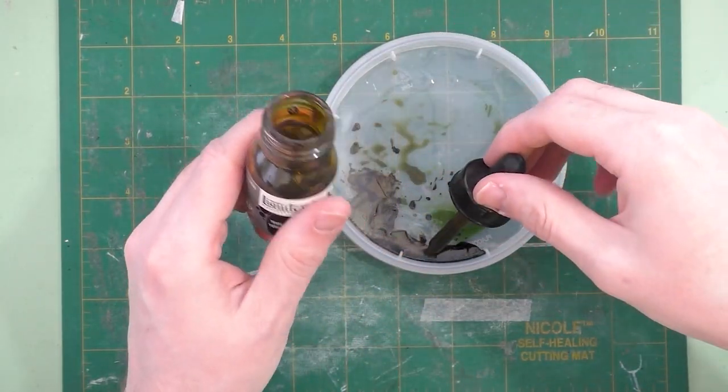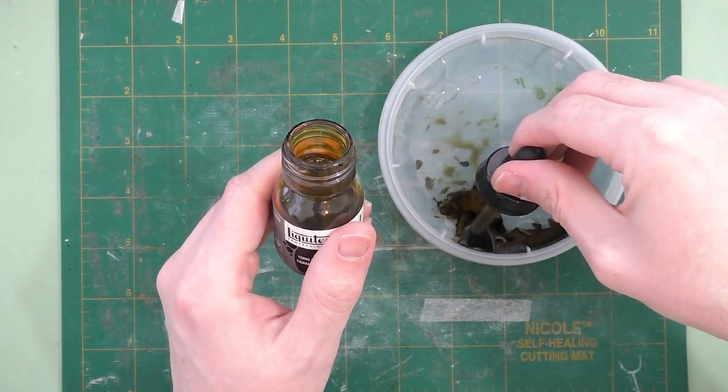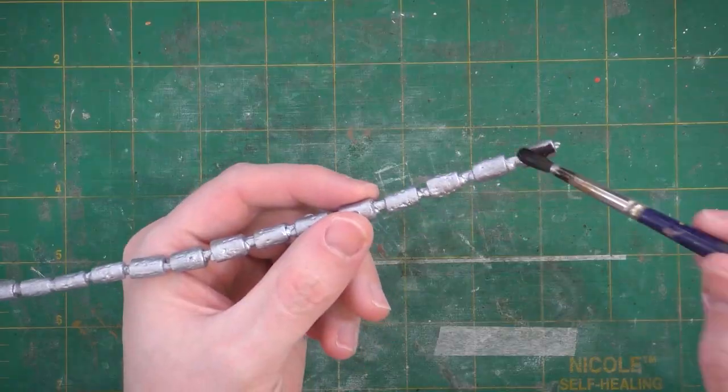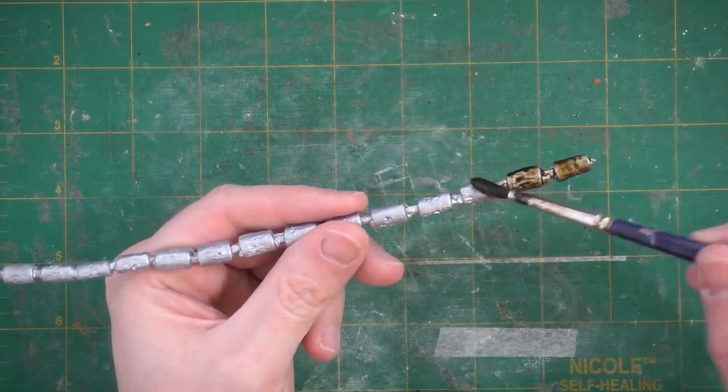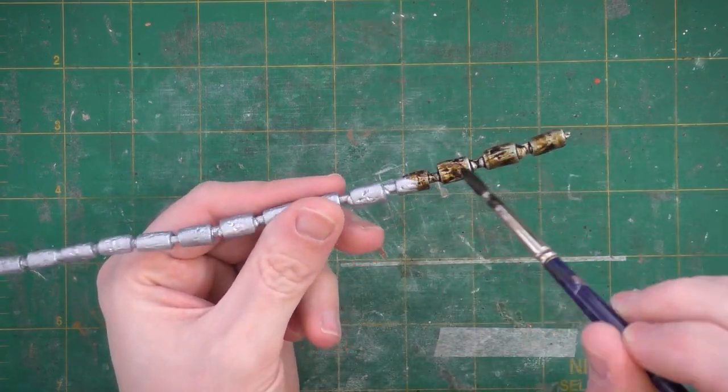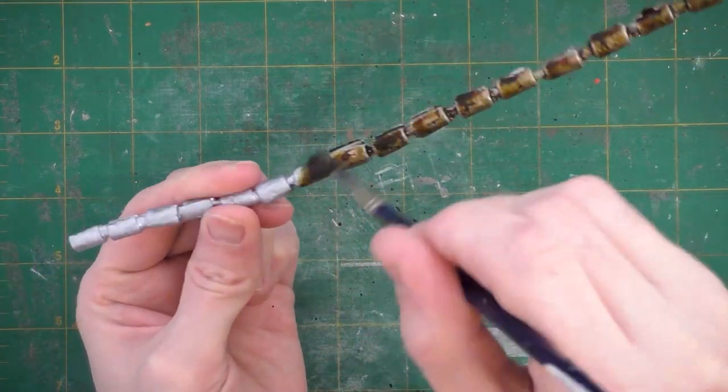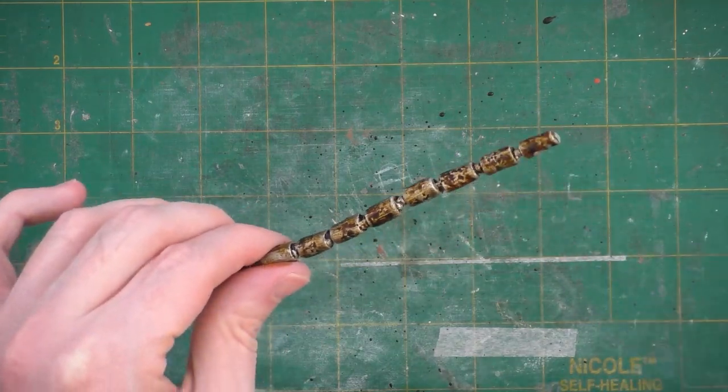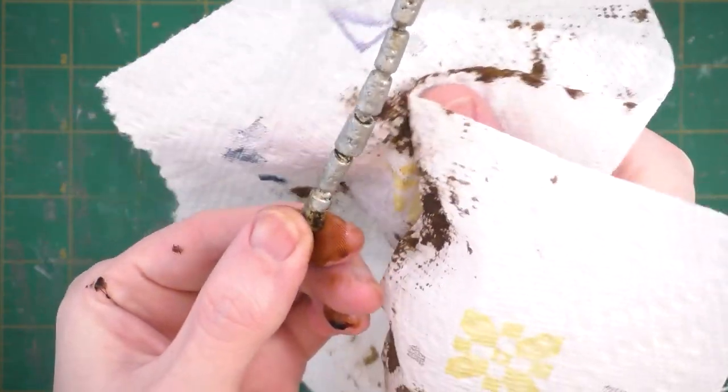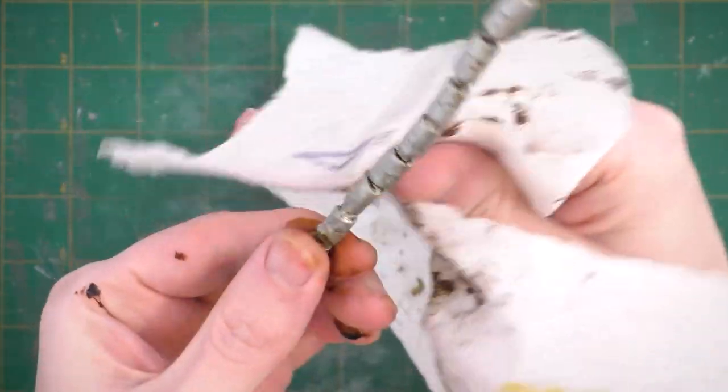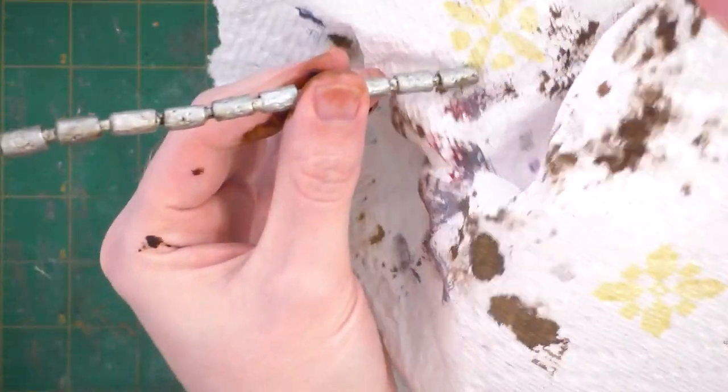We'll do an ink wash with this transparent raw umber. Unless I want a detail heavily accented, I tend to add a little water to the ink and even sometimes a tiny dab of dish soap. You can see how the ink wash is bringing up all the dents and scratches on the surface. After the ink's been on the surface for a minute or two, we'll wipe away the excess to make the details a little more subtle.